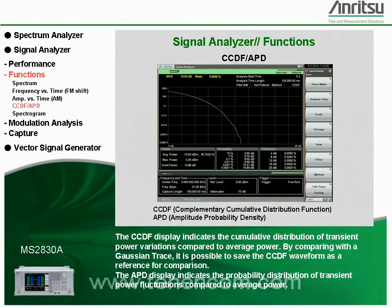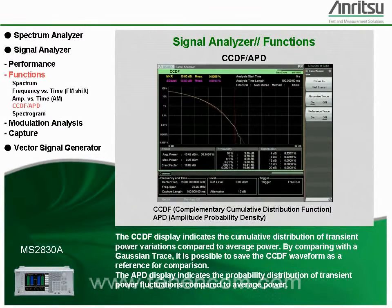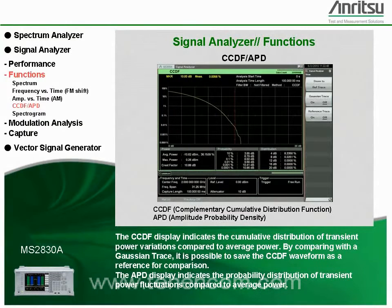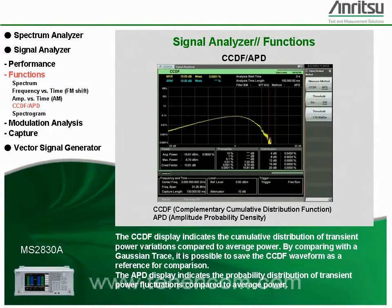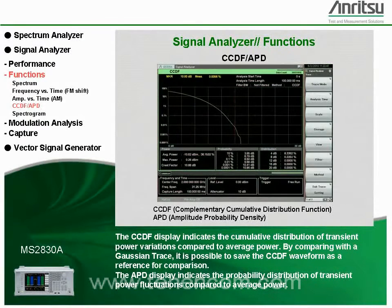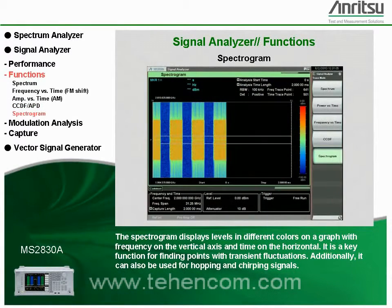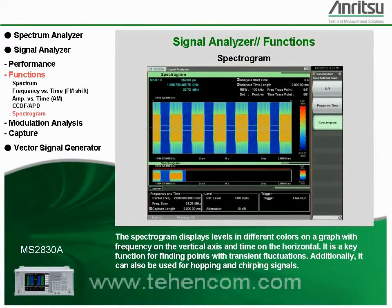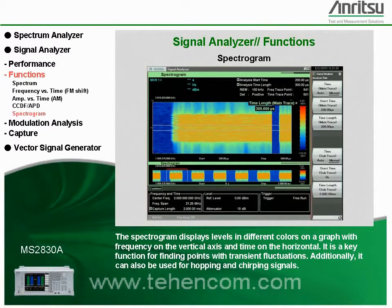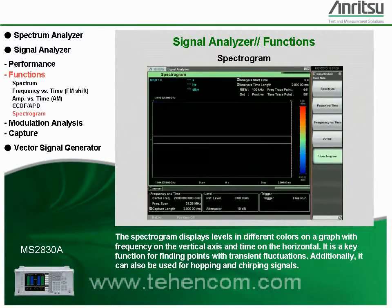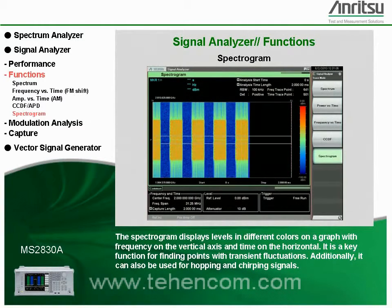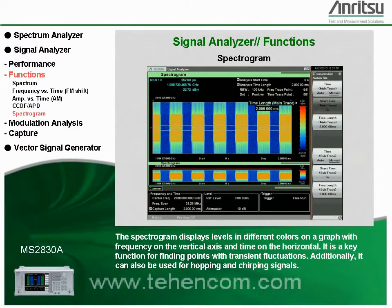The CCDF display indicates the cumulative distribution of transient power variations compared to average power. By comparing with a Gaussian trace, it's possible to save the CCDF waveform as a reference for comparison. The APD display indicates the probability distribution of transient power fluctuations compared to average power. The spectrogram displays levels in different colors on a graph with frequency on the vertical axis and time on the horizontal. It's a key function for finding points with transient fluctuations, and can also be used for hopping and chirping signals.